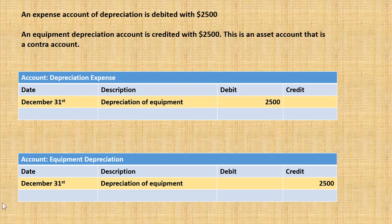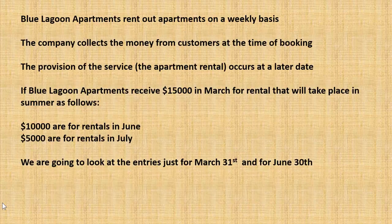On December the 31st we debit the depreciation expense account with two thousand five hundred and credit an equipment depreciation account with two thousand five hundred. That equipment depreciation account, although it is an asset account, is called a contra account because the entries are the opposite of what we would normally expect — we'd normally expect debits in asset accounts, but in the contra account you have credits.